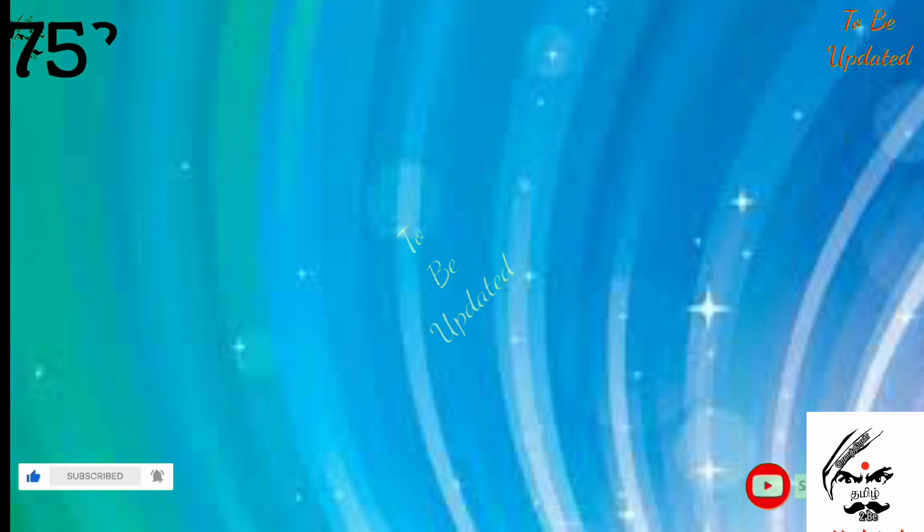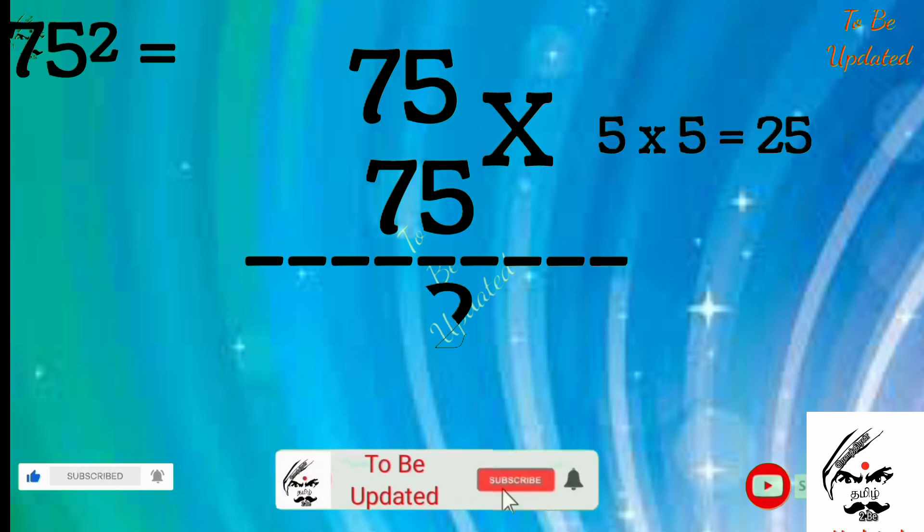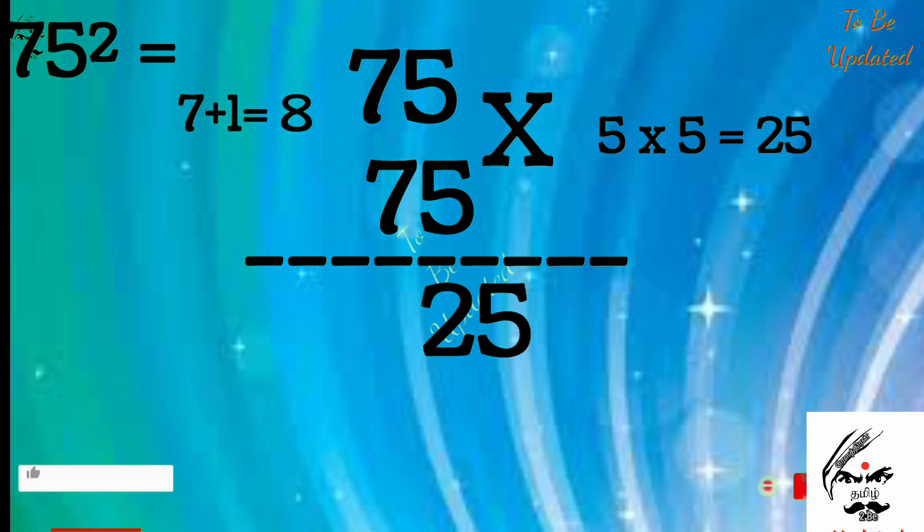75 square. We are just going to multiply the unit digit, so 5 times 5 is 25. And the first number is 7, so 7 plus 1 equals 8. That 8 we are going to multiply with the down number, so 8 times 7 is 56. So 75 squared is 5625.